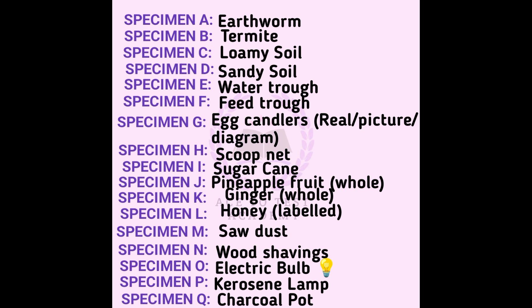Here are our specimens: A - Earthworm (S1), B - Termite, C - Loam soil, D - Sandy soil, E - Water trough, F - Feeding trough, G - Egg candler, H - Scoop net, I - Sugar cane, J - Pineapple fruit, K - Ginger, L - Honey, M - Sawdust, N - Wood shaving, O - Electric bulb, P - Kerosene lamp, Q - Charcoal pot.